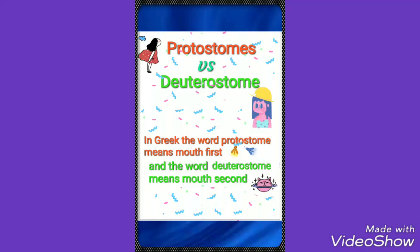Hello and welcome to Biology Time. Today's topic of discussion is the protostomes and the deuterostomes. In Greek, the word protostome means 'mouth first' and the word deuterostome means 'mouth second'.